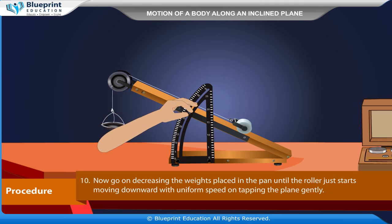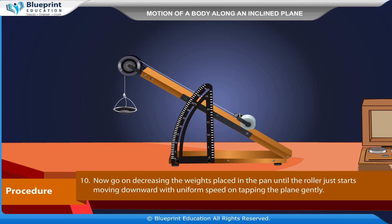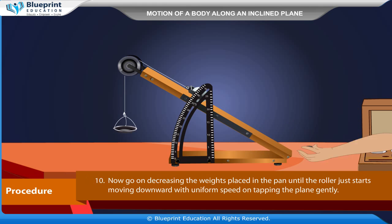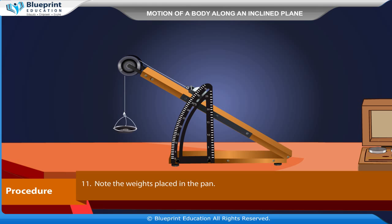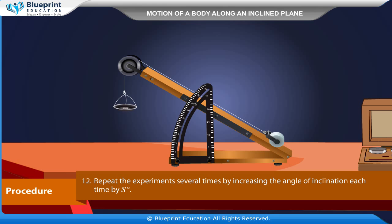Now, go on decreasing the weights placed in the pan until the roller just starts moving down with uniform speed on tapping the plane gently. Note the weights placed in the pan.